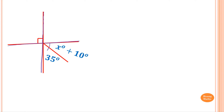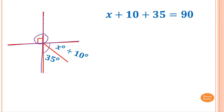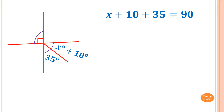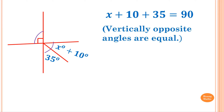This angle and this angle are equal. The small square symbol means it's 90 degrees. So X plus 35 degrees is equal to 90 degrees. This angle equals this angle — the reason is vertically opposite angles are equal.